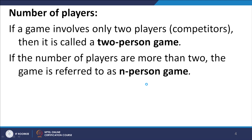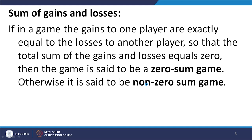One aspect to understand is the number of players. There could be 2 kinds of situations: if a game involves only 2 players or competitors, it is called a 2-person game; if there are more than 2 persons involved, it is called an n-person game. Regarding the sum of gains and losses: if the gains to one player are exactly equal to the losses to another so that the total sum equals 0, the game is called a zero-sum game. Otherwise, it is a non-zero-sum game.